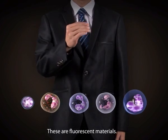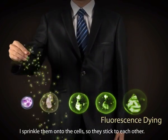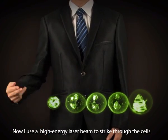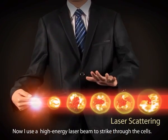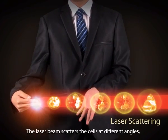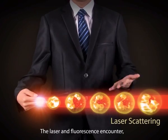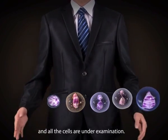These are fluorescent materials. I sprinkle them onto the cells, so they stick to each other. Now I use a high-energy laser beam to strike through the cells. The laser beam scatters the cells at different angles and gives us different information. The laser and fluorescence encounter, and all the cells are under examination.